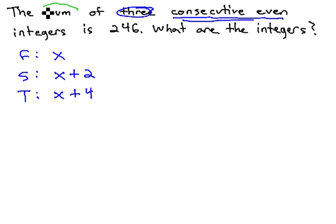This problem asks us to find the sum of the integers. Sum means we add them together. x plus x plus x is 3x, plus 2 plus 4 is 6, and we're told the sum is 246.